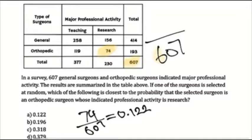The probability of the selected surgeon whose indicated professional activity is research — the answer is 0.122, so it's A.